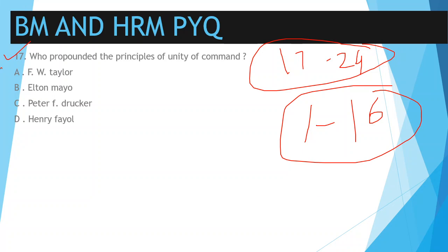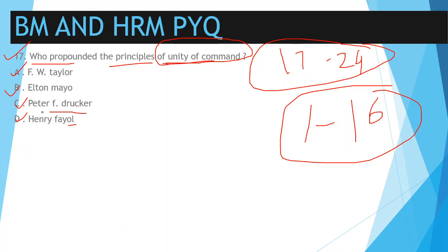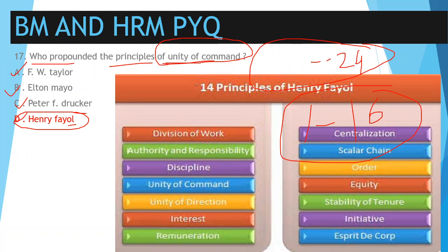Question number 17: who propounded the principles of unity of command? This is a basic question — if you know the principles of management properly, you can answer it. The options are: A) F.W. Taylor, B) Elton Mayo, C) Peter F. Drucker, and D) Henry Fayol. Unity of command was given by Henry Fayol.